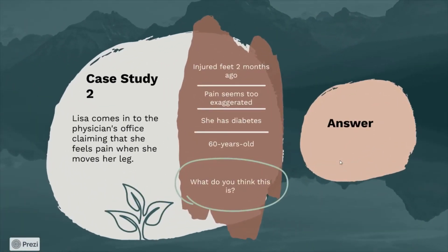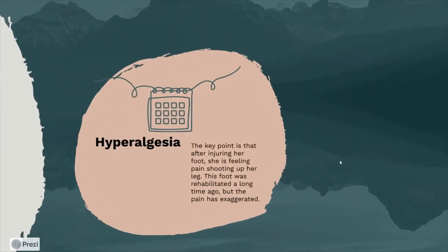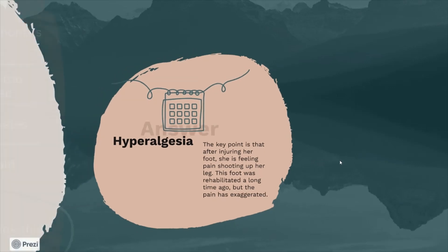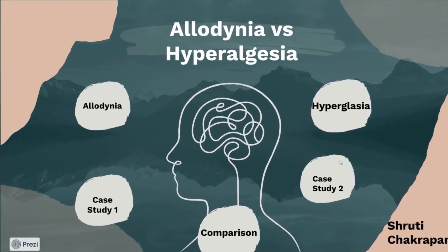Case Study 2: Miss Lisa comes into the physician's office claiming that she feels pain when she moves her leg. She injured her foot two months ago and the pain seems exaggerated. She has diabetes and is 60 years old. The answer is she has hyperalgesia — the key point is that after injuring her foot, she feels pain shoot up her leg, the foot was rehabilitated a long time ago, and the pain has exaggerated. Hopefully you can now differentiate between allodynia and hyperalgesia.